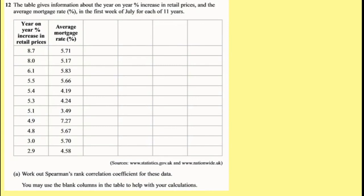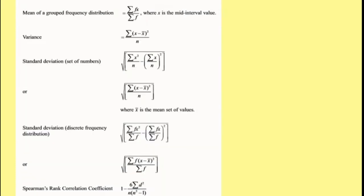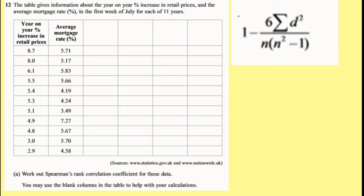The table gives information about the new percentage increase in retail prices. The average mortgage rate percentage in the first week of July for 11 years. Work out the Spearman's rank coefficient with these data. You may use blank columns to help you. And again, we've got to think about, I don't know anything about Spearman's rank actually, I've forgotten what the formula is. But I know I've got this formula page, and at the bottom you've got one that clearly says Spearman's rank correlation coefficient, so I would use that one. I'm just going to put it in the top right to see if we need it. And you have to just remember what all these numbers mean. Now the one that's going to take the most working out is the sum of my difference squared. And this is one that's not in the only need to think.